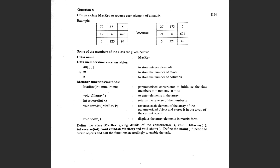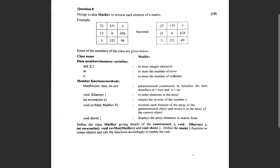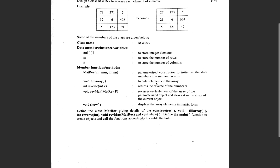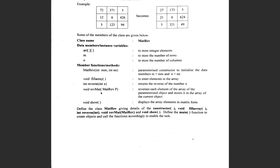The data members are: arr to store integer elements, m to store the number of rows, and n to store the number of columns. The constructor takes mm and n as parameters to initialize data members m and n. fillArray enters elements in the array, reverseX determines the reverse of number x, and revMat reverses each element of the array.